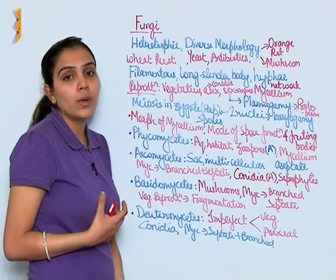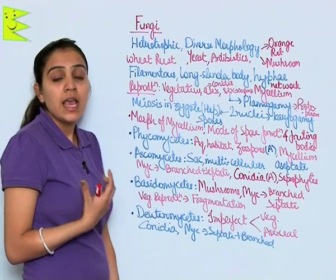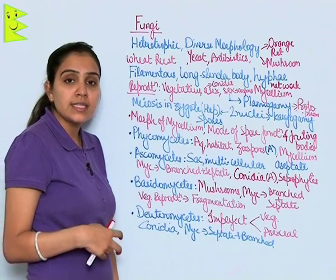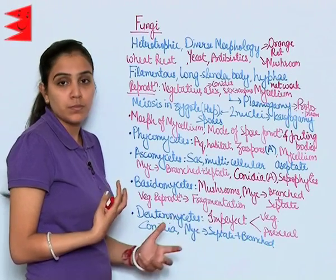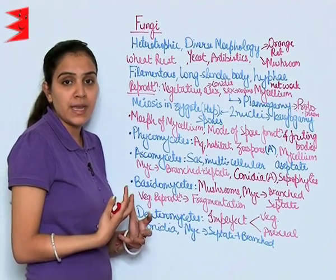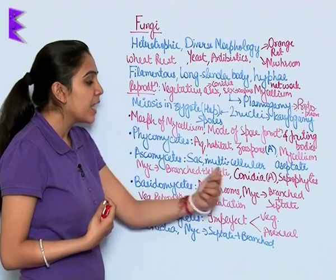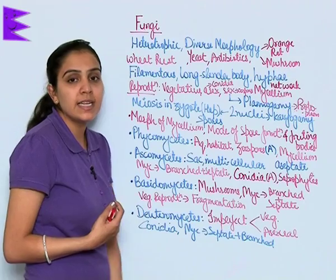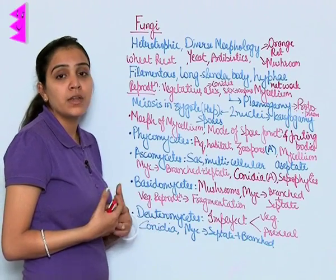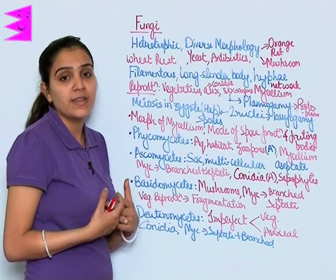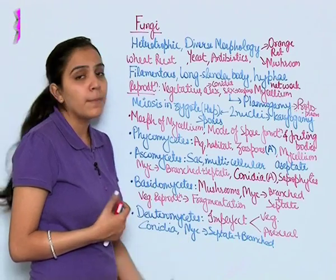Next is Basidiomycetes. Mushrooms, which we eat, are Basidiomycetes; they are also known as puffballs. They grow in soil, on trees, and as a parasite on the host body.